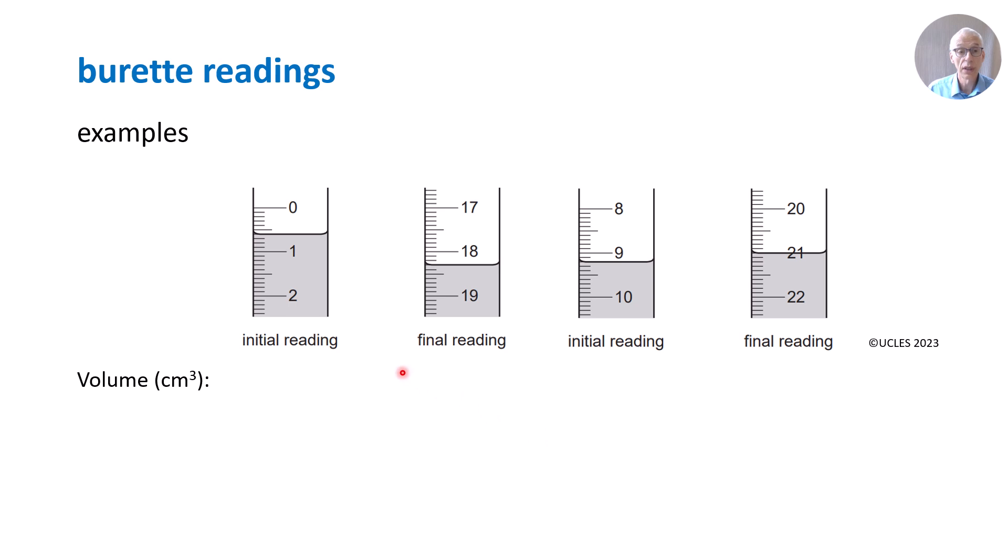We're going to start at zero and we've delivered 0.6 centimeters cubed. Here, again, we've started at zero and we've delivered 18.3. So we're reading beyond 18, that's 18.3. We're not reading up, we're delivering and the meniscus is falling. So we've delivered 18.3. Here, we've delivered 9.2. We've started at zero and the level has gone down in the burette to 9.2. And here, 21.0. So here's an important point: all volumes must be recorded to at least one decimal place. You may be tempted in the paper six exam to write 21, you won't get the mark. It's 21.0. All volumes recorded to at least one decimal place.